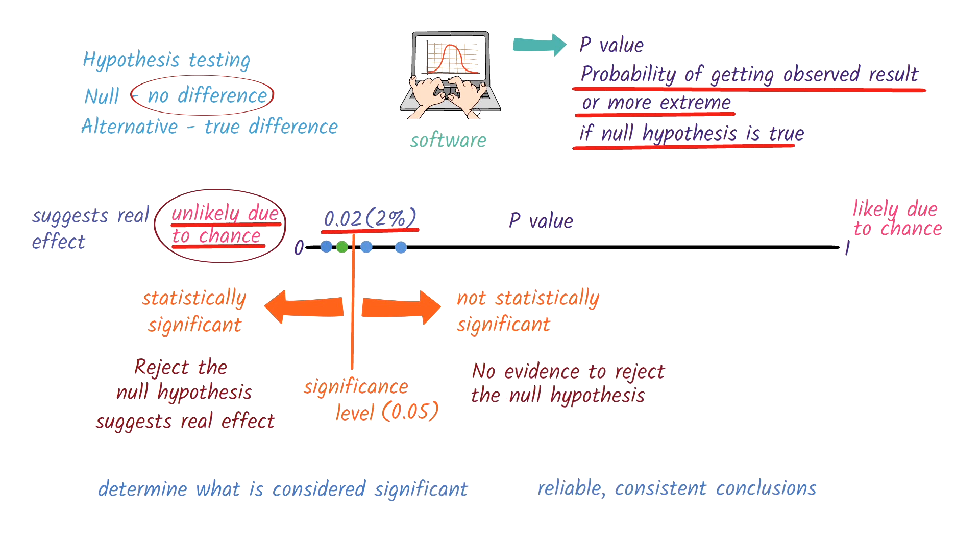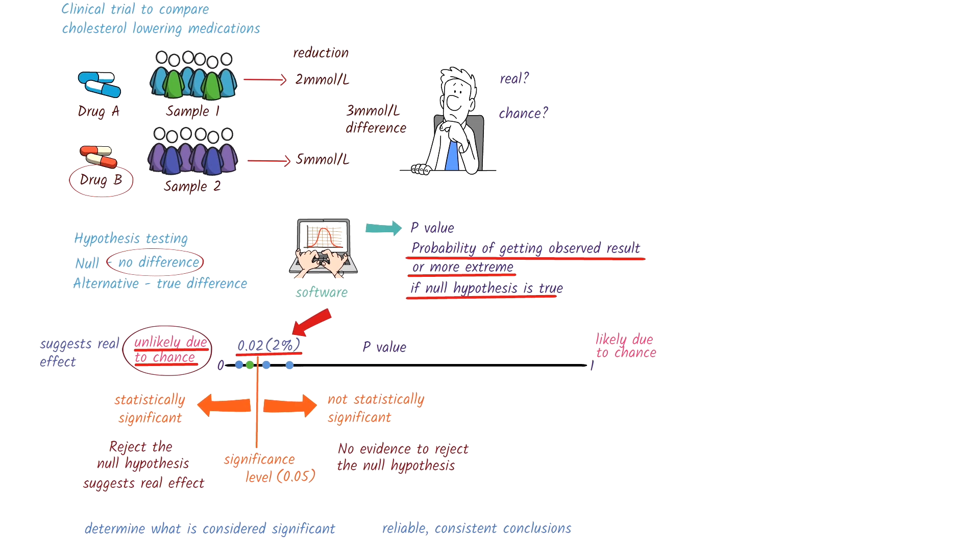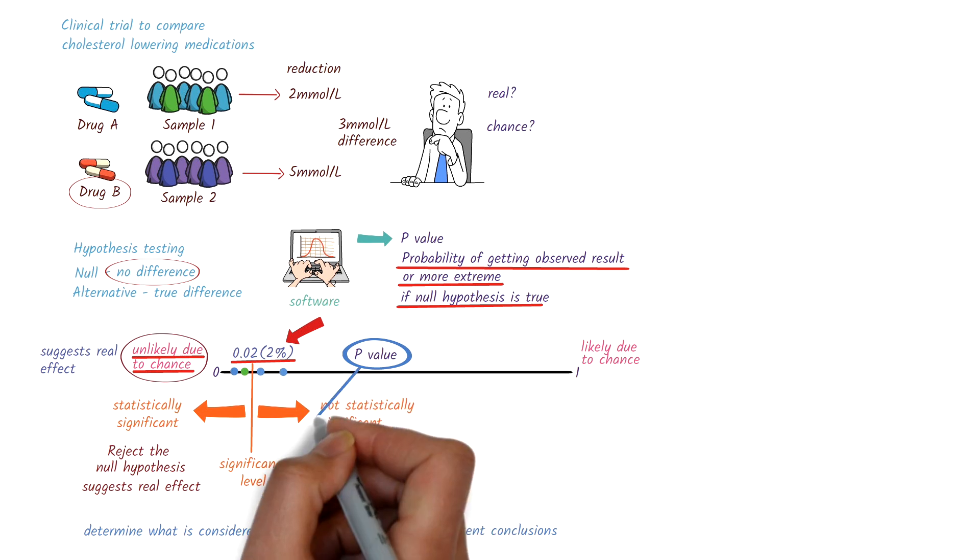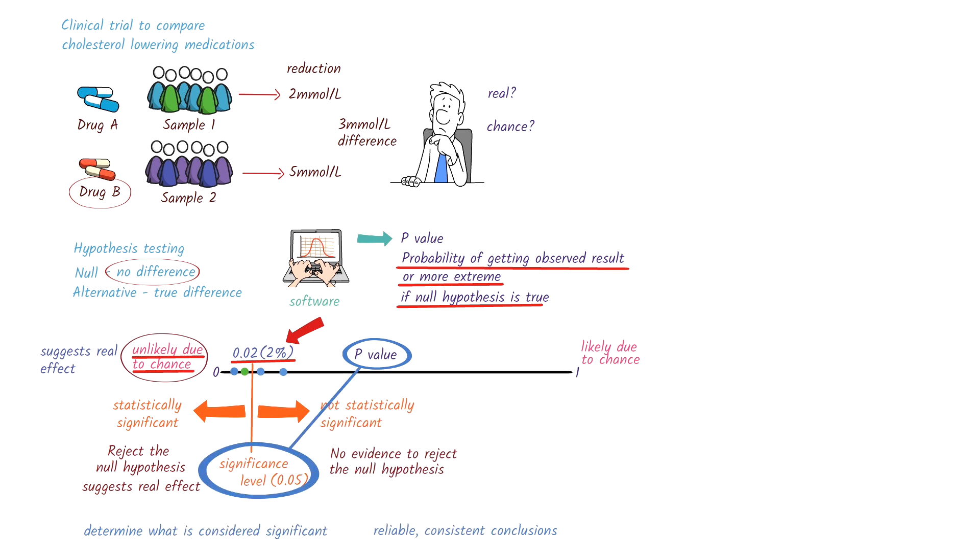It's important to remember that even with a p-value of 0.02, there is still a 2% probability that the result happened by chance. But because we decided on the significance level beforehand, this level of uncertainty is generally considered acceptable. So that's how we can use the p-value and compare it with a significance level to determine whether the results are statistically significant or not.